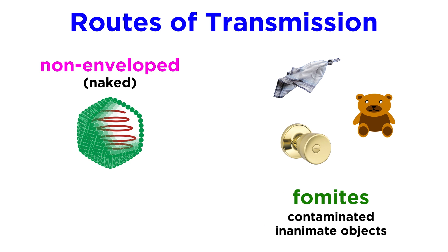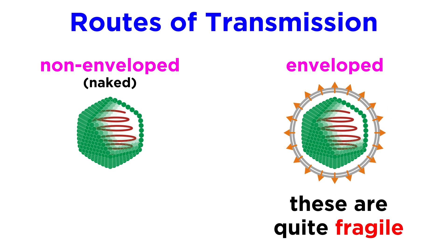We refer to contaminated inanimate objects, like handkerchiefs, toys, or doorknobs, as fomites. It might seem a little counterintuitive, but enveloped viruses are pretty fragile compared to their non-enveloped counterparts.